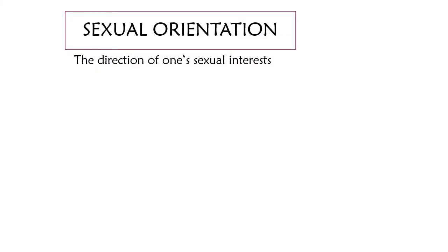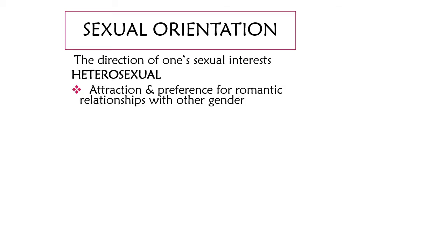That video was a good preview of the things we're going to talk about here — not everything in that video, but it gives a good overview as well as adding to what I'm going to talk about. So let's first talk about sexual orientation. Sexual orientation is the direction of one's sexual interest. Heterosexual means attraction and preference for romantic relationships with the other gender.